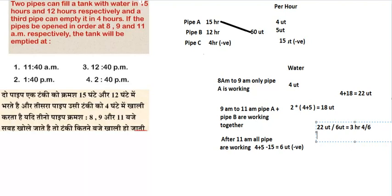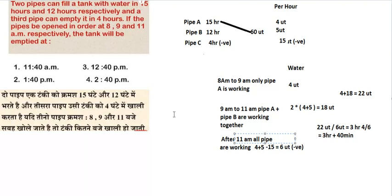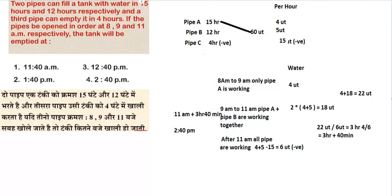22 divided by 6 equals 3 hours and 4/6 of an hour. Since 4/6 multiplied by 60 = 40 minutes, the time after 11 am is 3 hours and 40 minutes. Adding this to 11 am gives 11 am plus 3 hours 40 minutes = 2:40 PM. That is the correct answer — option 4.